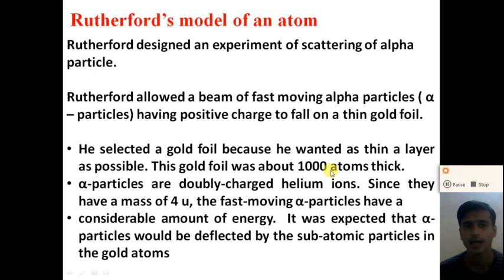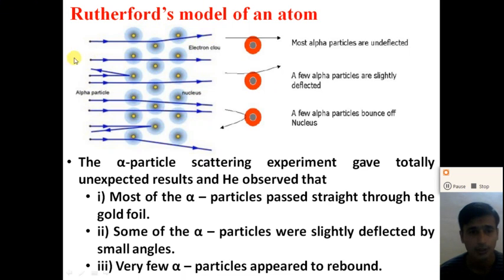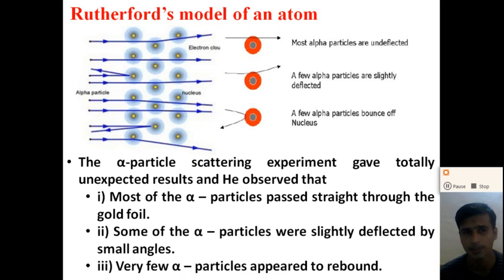What result was obtained after performing the experiment of the scattering of alpha particles from the golden foil? The golden foil has thousands of atoms of gold. When alpha particle rays are incident on this golden foil, which has a thousand atoms thick, Rutherford expected that all the alpha particles would be deflected and rebound back in the direction of incidence.